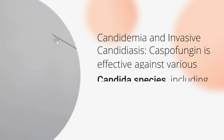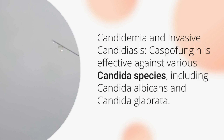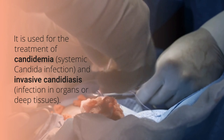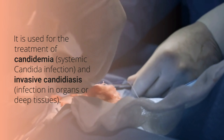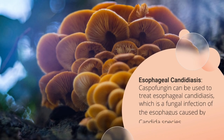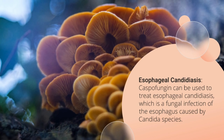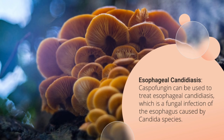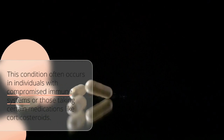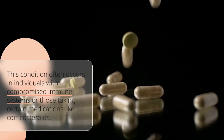In candidemia and invasive candidiasis, caspofungin is effective against various Candida species, including Candida albicans and Candida glabrata. It is used for the treatment of candidemia and invasive candidiasis. In esophageal candidiasis, caspofungin can be used to treat esophageal candidiasis, which is a fungal infection of the esophagus caused by Candida species. This condition often occurs in individuals with compromised immune systems or those taking certain medications like corticosteroids.